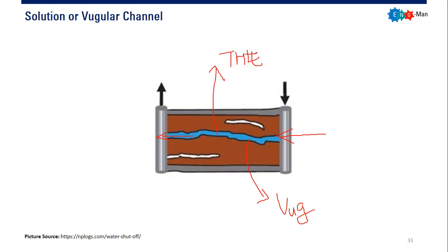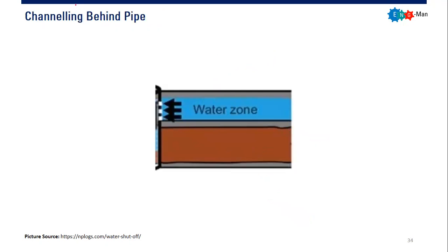Thief zone—it steals your water and just brings it to other places like your producer or something like that. So it's a very high permeability zone or stream or layer. So, solution or vugular channels, and the next is channeling behind pipe.